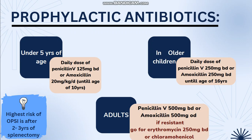We can also use IV antibiotics in hospital. Importantly, patients are at higher risk of opportunistic post-splenectomy sepsis after two to three years of splenectomy, so antibiotic dose should be maximized during that period. We also need to educate patients regarding animal handling, because Capnocytophaga canimorsus — the organism that causes post-splenectomy sepsis — is present in the oral cavity of dogs, cats, and other animals. Patients should be advised not to handle these animals without precautions.